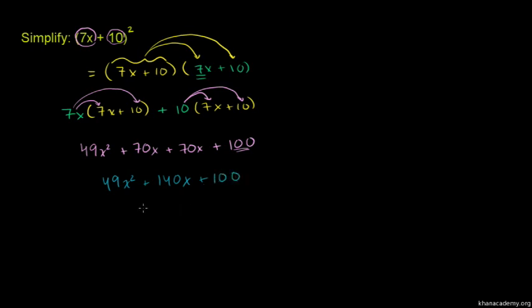To review the solution: 7x times 7x gives 49x². 7x times 10 appears twice, giving 140x total. 10 times 10 equals 100. The final answer is 49x² + 140x + 100.